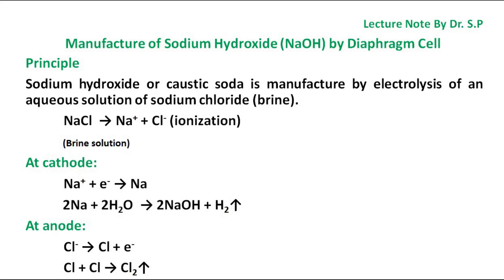At the cathode, sodium cation Na⁺ takes an electron to give sodium. This sodium reacts with water to give caustic soda and hydrogen gas. At the anode, chloride Cl⁻ ion forms chlorine by liberating one electron, and the obtained chlorine combines to form chlorine gas molecule Cl₂.